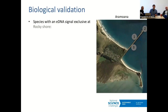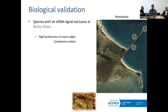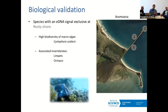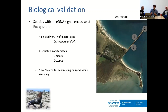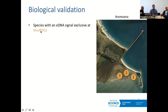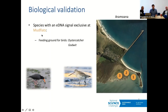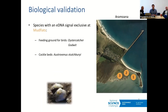On the rocky shore, there's high biodiversity of macroalgae and associated invertebrates — you can see them when you're there. We also detected the New Zealand fur seal, which was resting on the rocks during sampling. In general, pinnipeds seem to be quite messy species — whenever you see them lying around, you pick them up in the water too. On the mud flats, we see birds that specialize on feeding there, like oystercatchers, and we also detect cockles, which is encouraging since Otago Harbour has significant cockle beds.